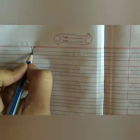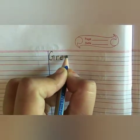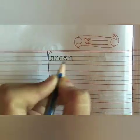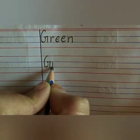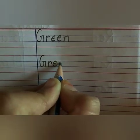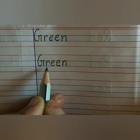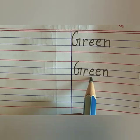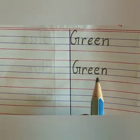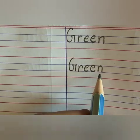Now we will write the next spelling. We will write Green. Capital G, small r, small e, small e, small n — Green. Students, yeh hum jo two times e likhtay hain, usse hum double e bhi keh saktay hain. G, R, double e, N — Green.